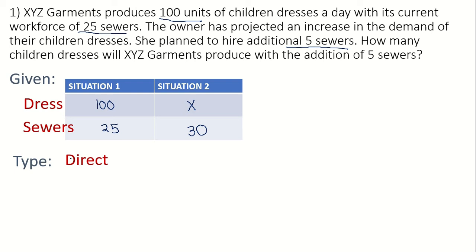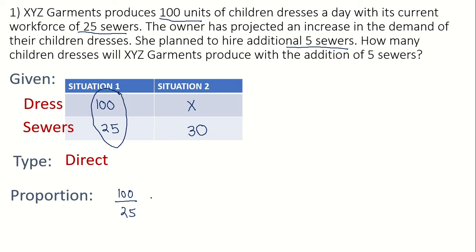Recalling the formula from the earlier slides: for direct proportion, we form the ratio from situation one as 100 over 25, and equate it to the ratio from situation two, which is X over 30. That is the correct arrangement of quantities for direct proportion.